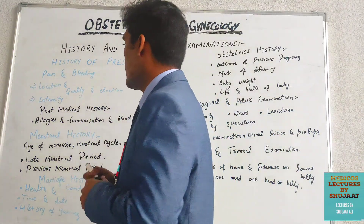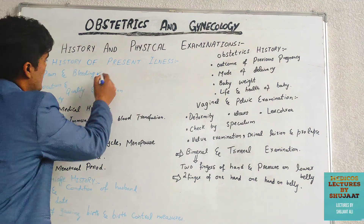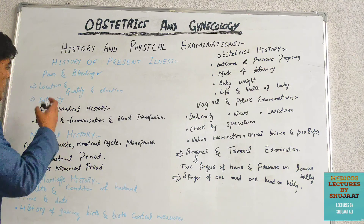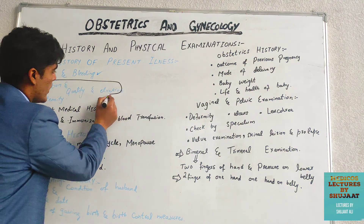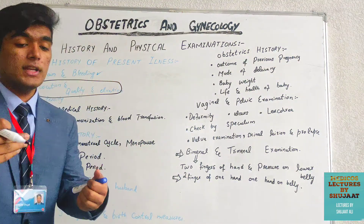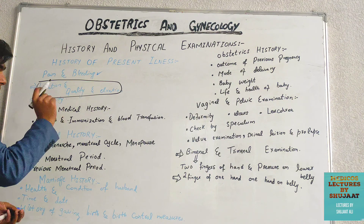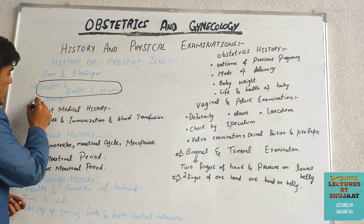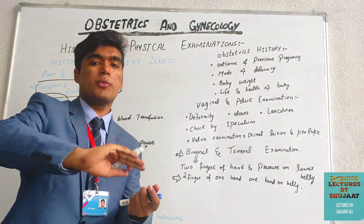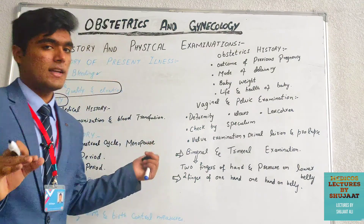In the history of present illness, we talk about pain and bleeding. For pain, we discuss the location, quality, and quantity — how severe is the pain the patient is feeling. For bleeding, we assess the intensity: how much blood is being lost from the body. This constitutes the present illness history.